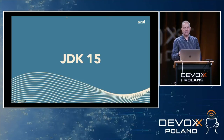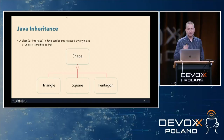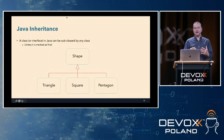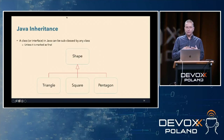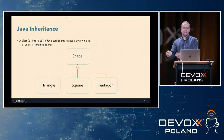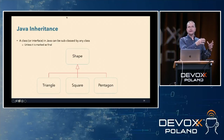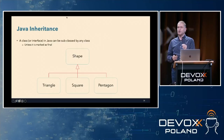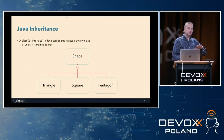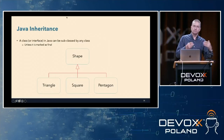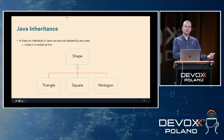Moving on to JDK 15. Let's talk a little bit about Java inheritance. Java is an object-oriented language, so we have superclasses and subclasses — a type hierarchy. We can define a type hierarchy where Shape is a superclass and Triangle, Square, and Pentagon are subclasses. The problem is that we don't have any real restriction on controlling who can subclass a given class. The only thing we can do is mark it as final and say nobody can subclass it — so it's all or nothing.